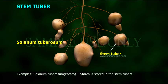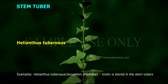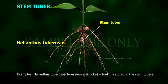Examples of Stem Tubers: Solanum tuberosum, commonly known as Potato, in which starch is stored in the stem tubers. Helianthus tuberosus, commonly known as Jerusalem artichoke, in which inulin is stored in the stem tubers.